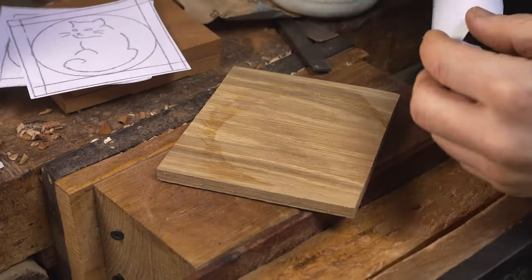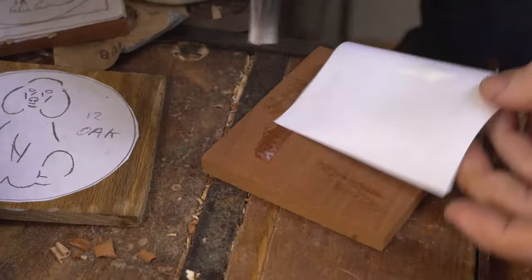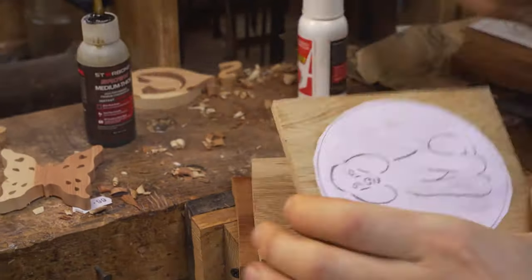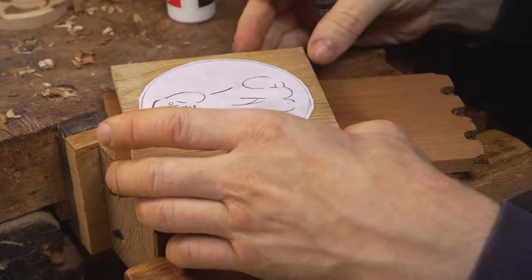We then stack cut the designs using a small dot of Starbond super glue and the accelerant. This allows us to cut out more than one layer at a time.